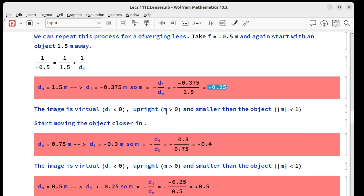Our image is right side up, but smaller than the object. We move closer in. We move to 0.75 meters. Our image distance is negative 0.3, so still virtual. Magnification, still positive, still less than 1. So it's an upright image that's smaller than the object, but it's bigger than it was further away.